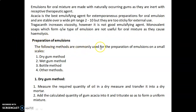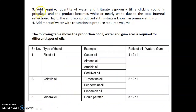The following methods are commonly used for the preparation of emulsions on a small scale: dry gum method, wet gum method, bottle method, and other methods. In the dry gum method, first measure the required quantity of oil in a dry measure and transfer it into a dry mortar. Then add the calculated quantity of gum acacia and triturate to form a uniform mixture. Add the required quantity of water and triturate vigorously until a clicking sound is produced and the product becomes white or nearly white due to total internal reflection of light. The emulsion produced at this stage is known as the primary emulsion.